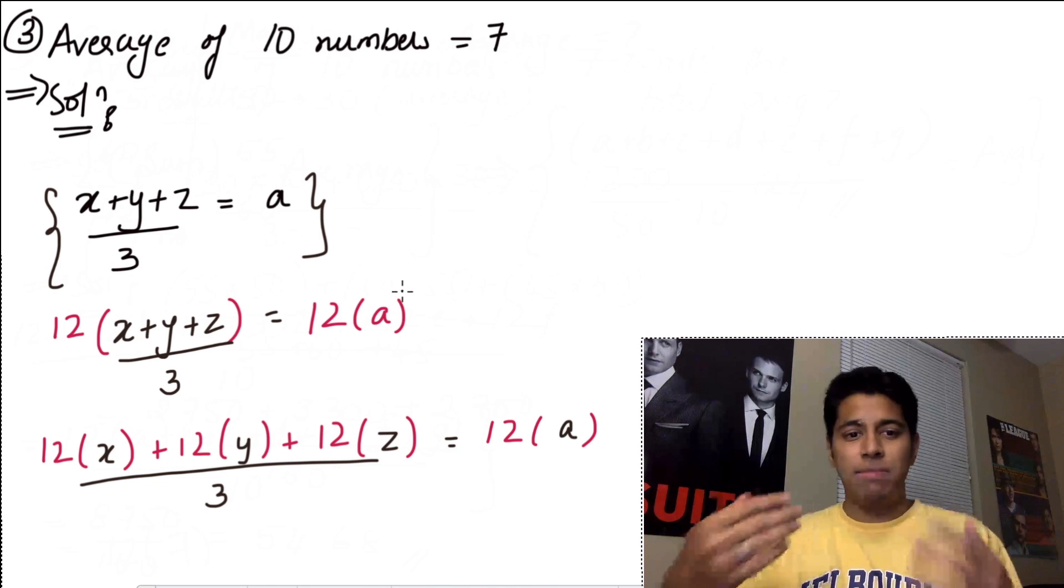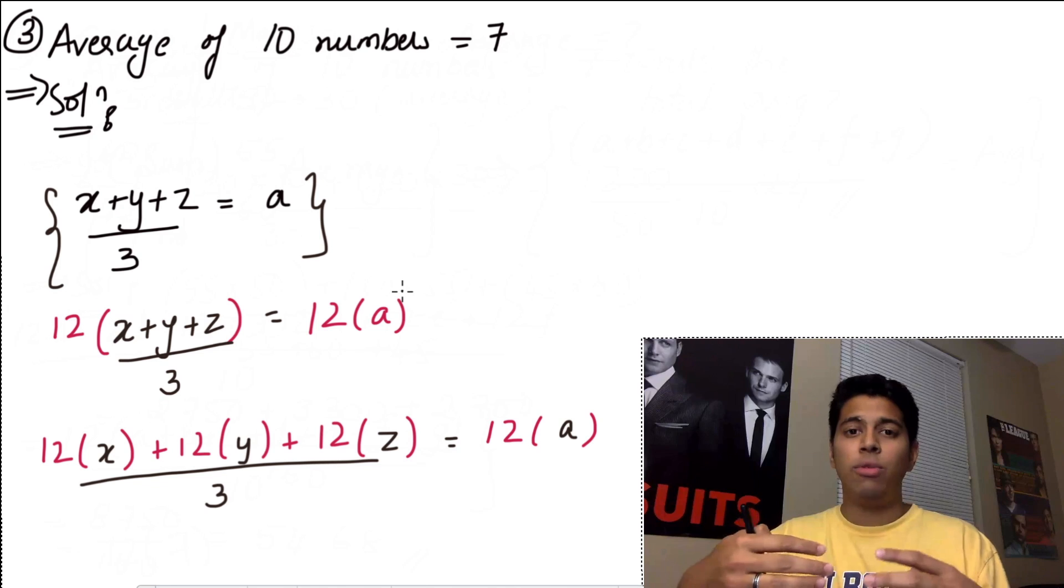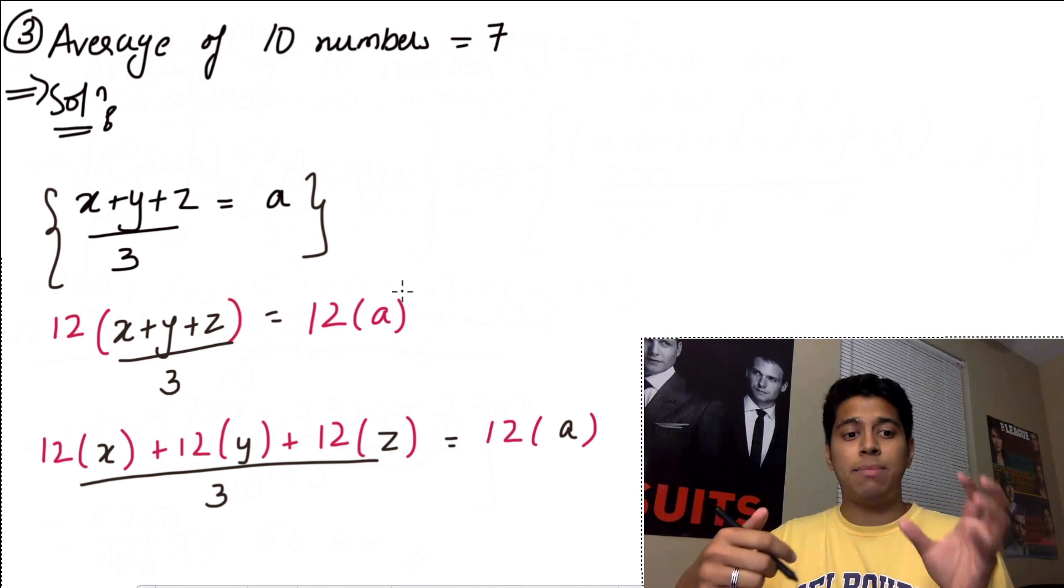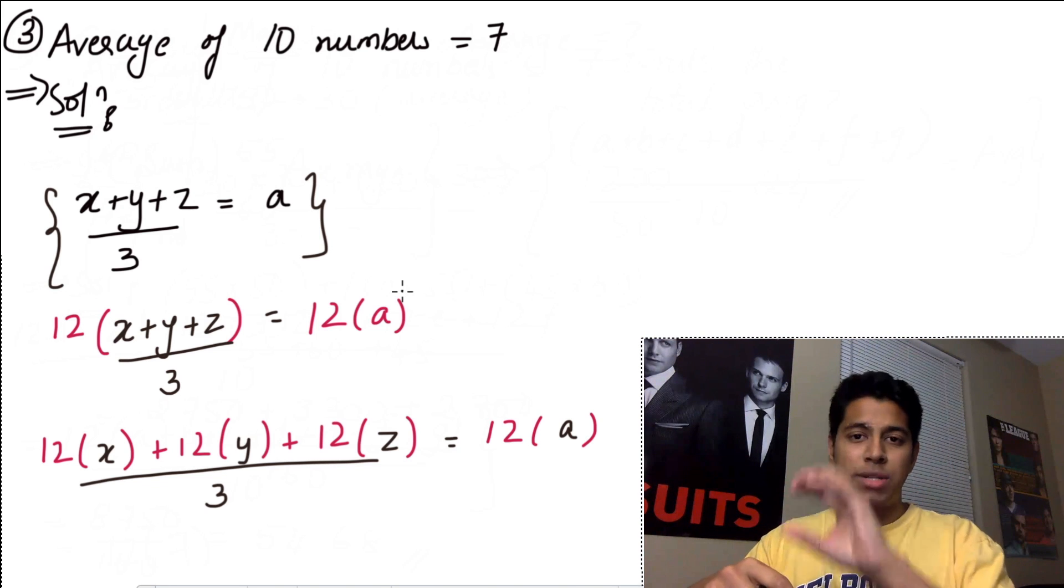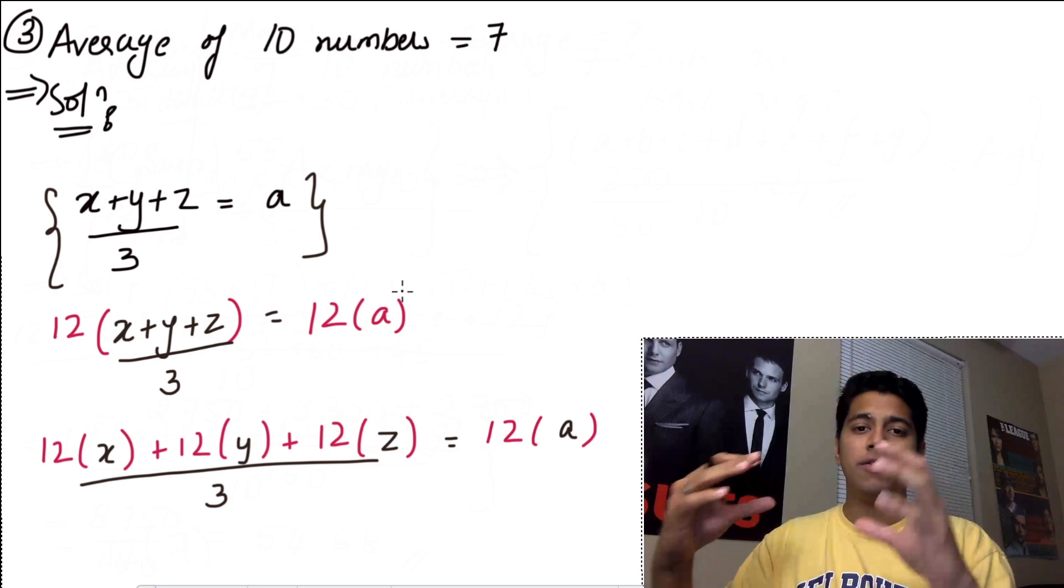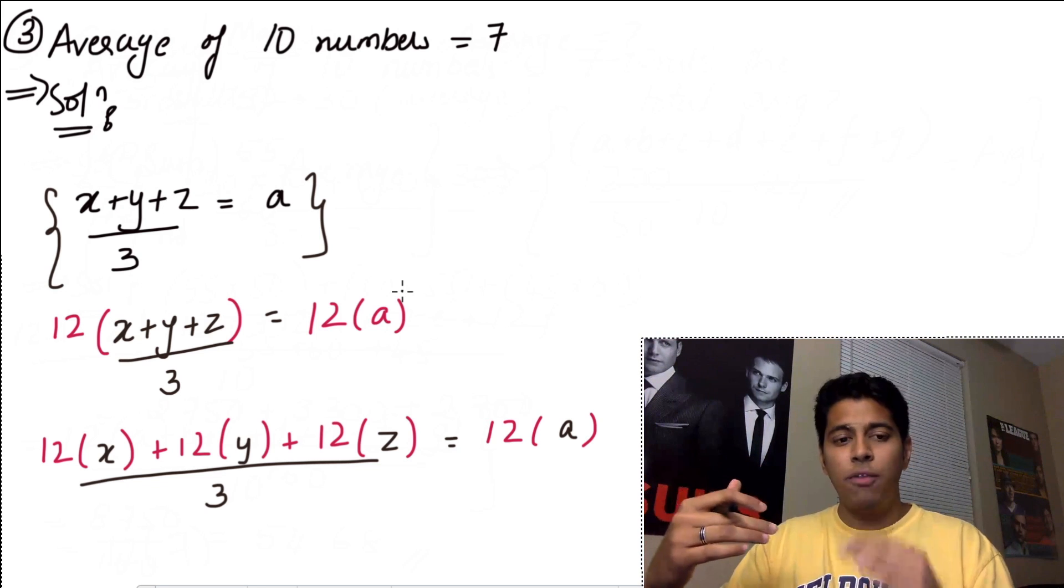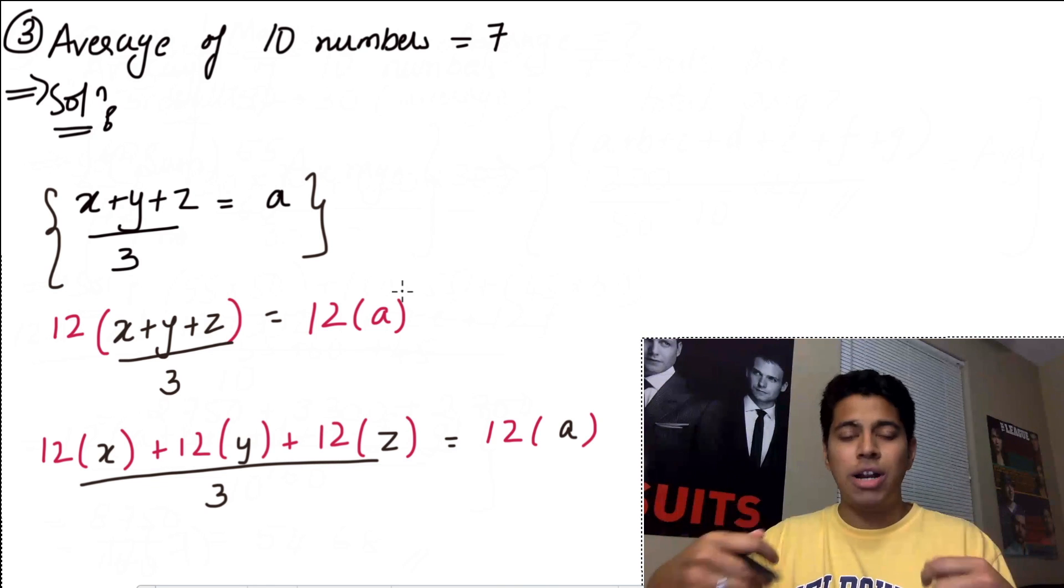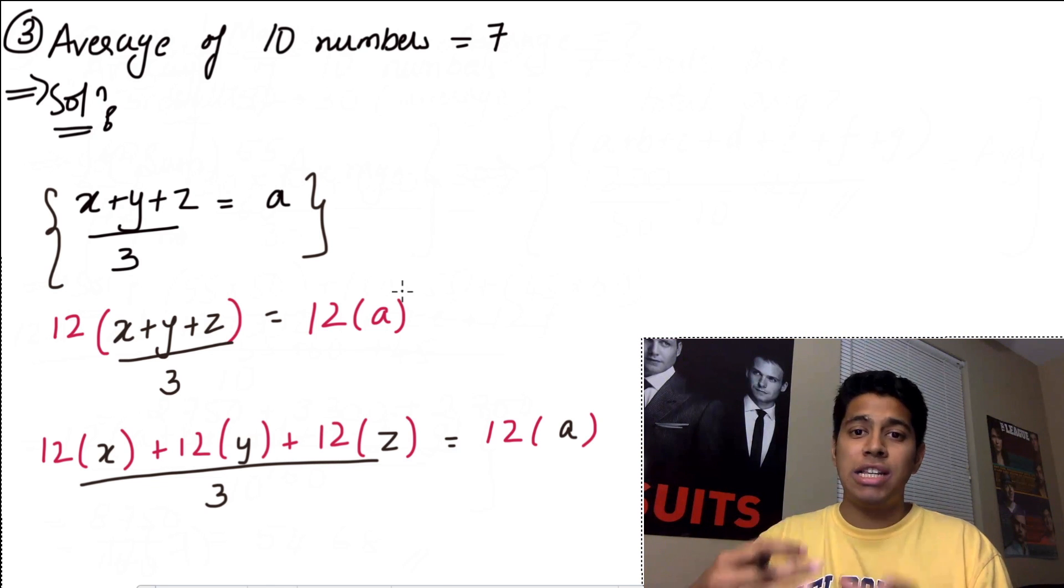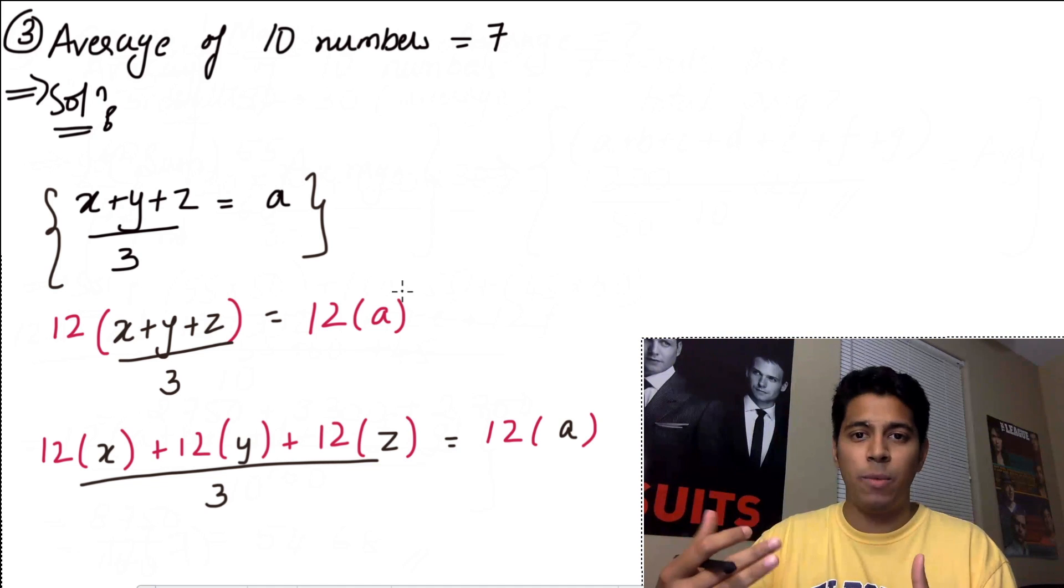Now what this essentially has become is that 12 has been multiplied into each of the numbers. And when you calculate the average again, suppose 12x was now one number, 12y was one number, and 12z was one number. When you find the average of these three numbers, you will see that it becomes 12a. If you compare it with your first equation, you should understand that if all your numbers are changed in a similar way, the average will also change in the same way, in the exact same way.